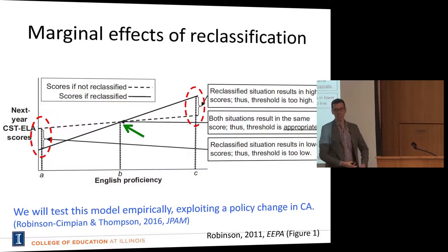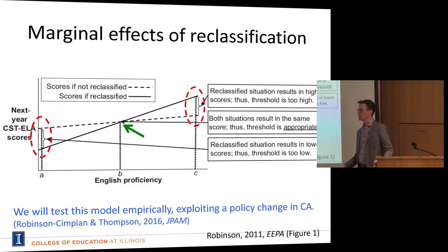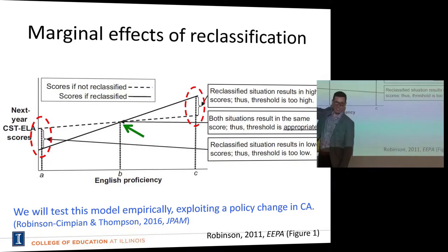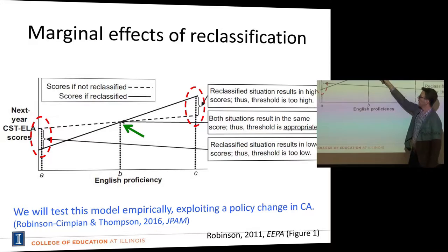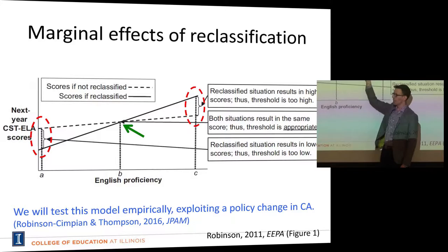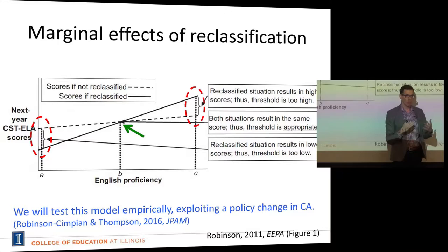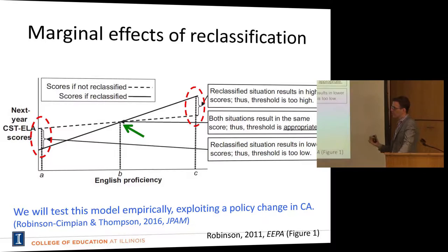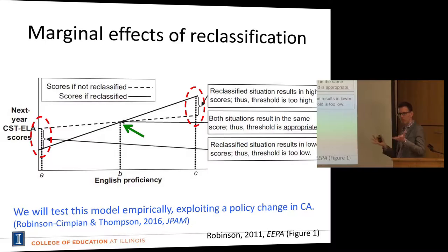Setting the threshold at either point A or point C is not ideal from a policymaking perspective. Really, the ideal spot is at point B, where there's a smooth transition from one setting to the other. That was the model laid out in the 2011 paper.